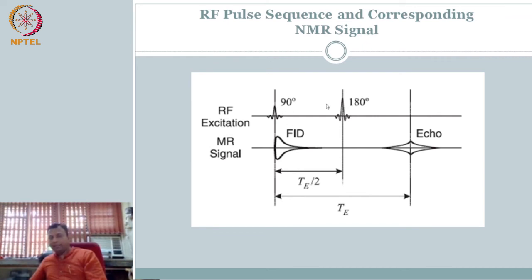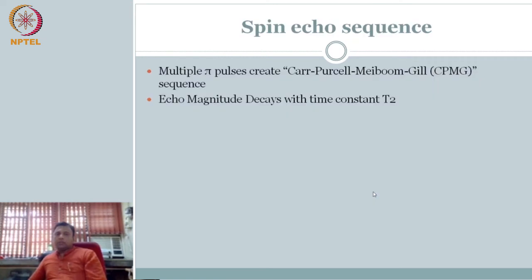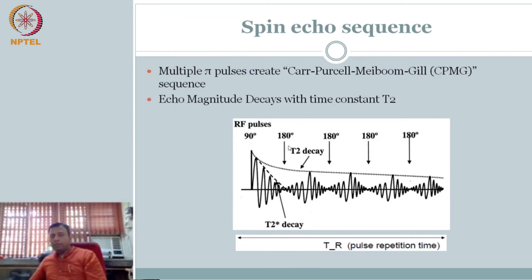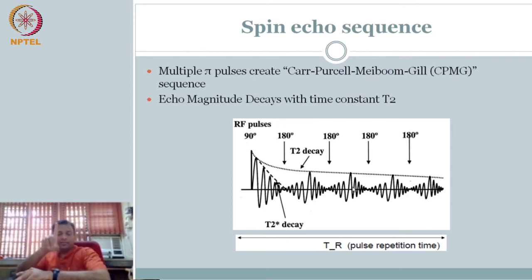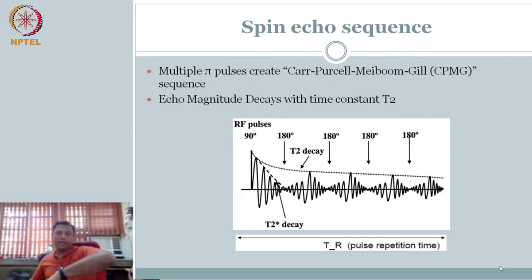So initially you have the RF excitation, then the MR signal — what I am measuring is going to be the echo signal. I have to design the TE and TE by 2. This is called a timing diagram and a pulse sequence diagram, because I know the sequence: 90 degrees and then I am giving 180 degrees after TE by 2, to get a signal that is an echo signal. So multiple pi pulses can be created — essentially you have 90 degrees and then you are applying multiple pi pulses.